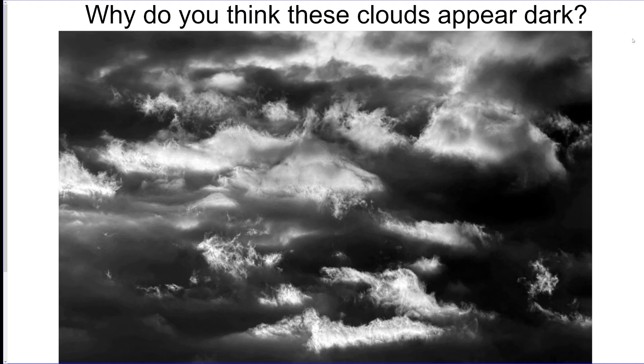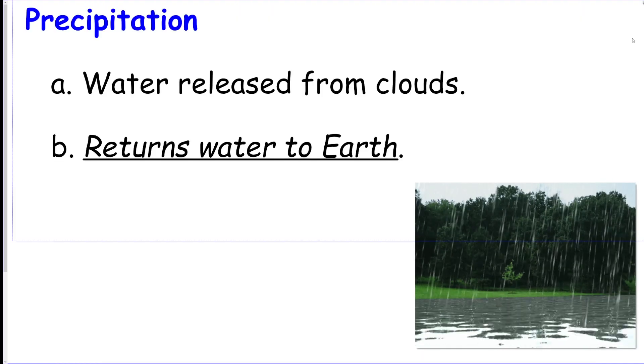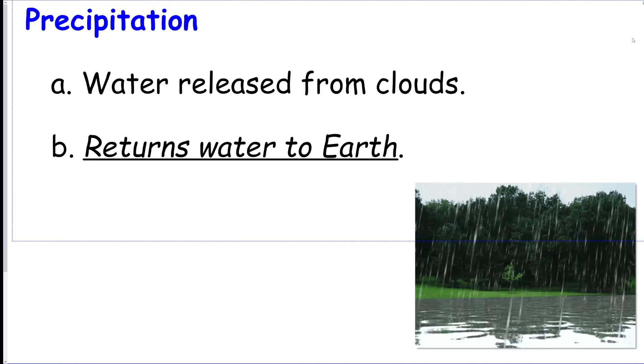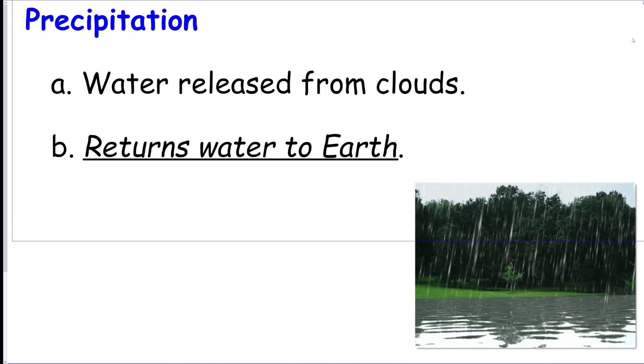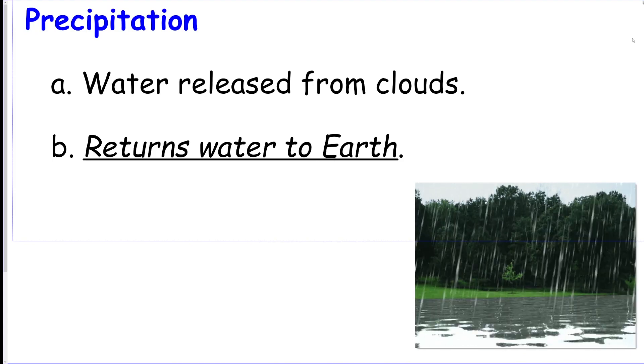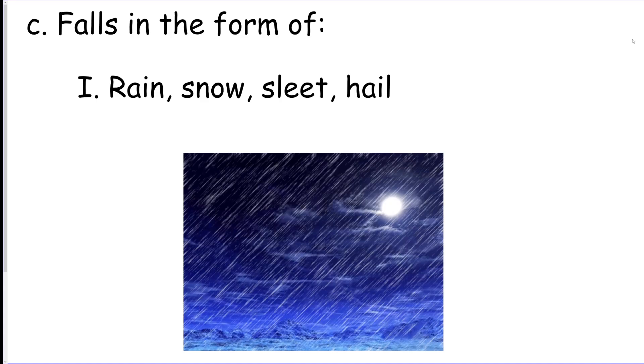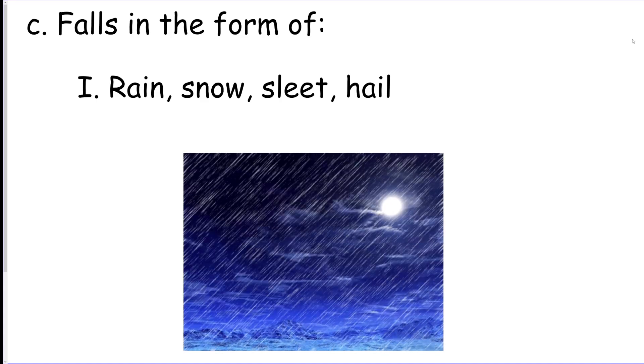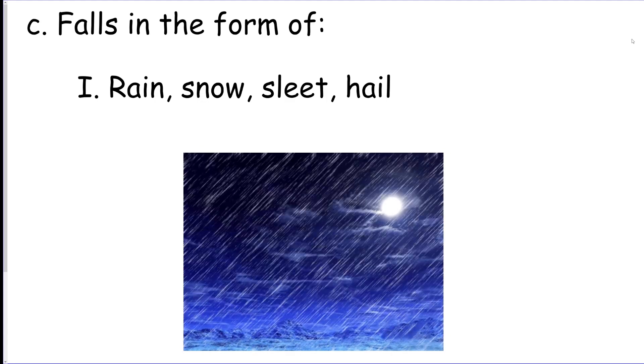Precipitation is water released from those clouds, bringing all that water back down to Earth. There's four different types - rain, snow, sleet, or hail - and that's going to be dependent on what the atmospheric conditions are and the temperature outside.